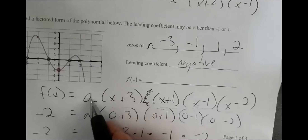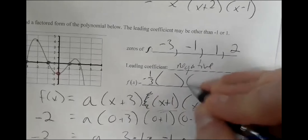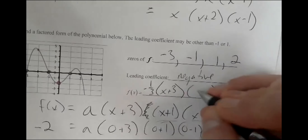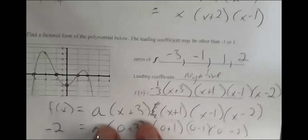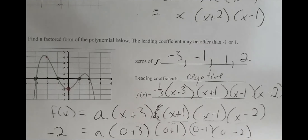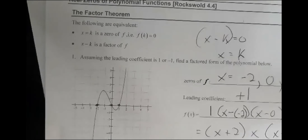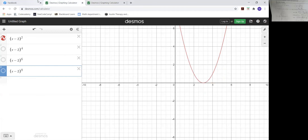We know our f of x looks like — we can rewrite our equation. It looks like negative one third, and I have my four factors. It's negative one third times x plus two, times x plus one, times x minus one, times x minus two. Next page — I want to go to Desmos. In the next page they talk about multiplicities, or multiplicities of zeros.